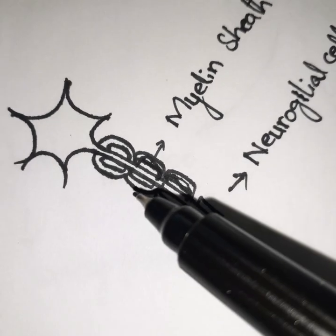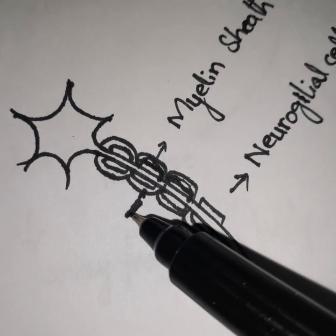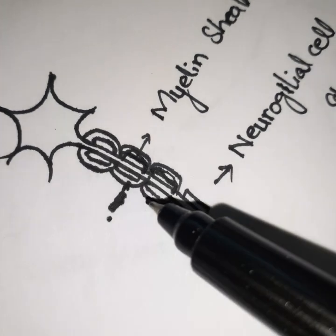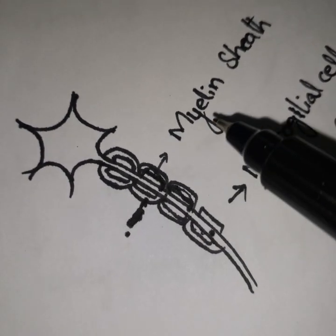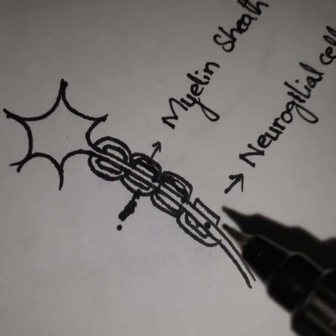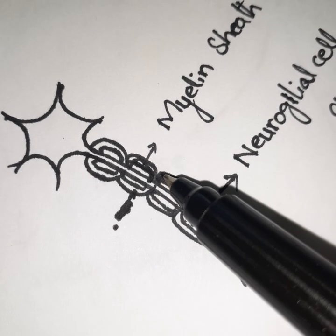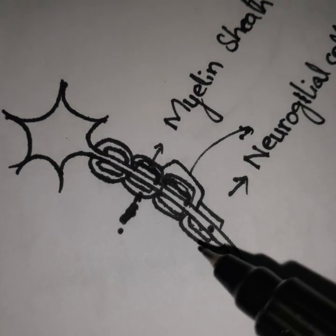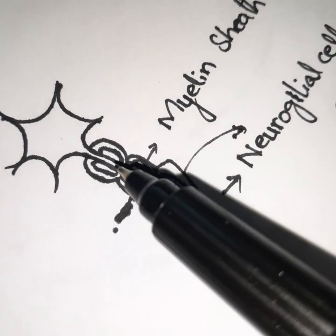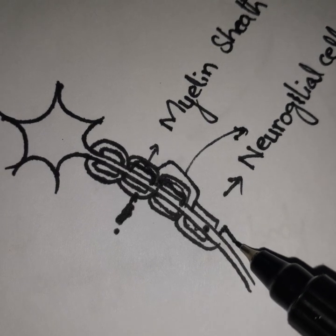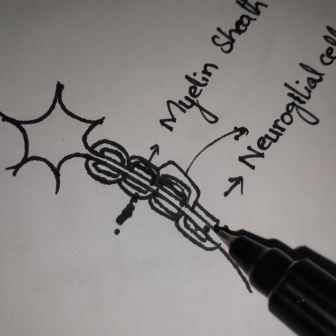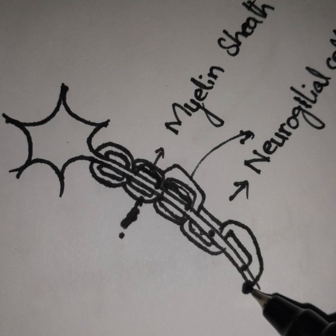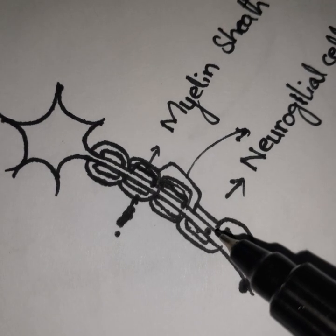The myelin sheath is secreted by the Schwann cells. These Schwann cells are present and they secrete a fatty layer that covers the axon — we call this the myelin sheath. This whole cell is called a neuroglial cell, which supports the neuron.